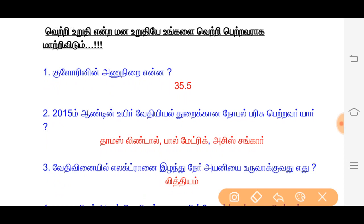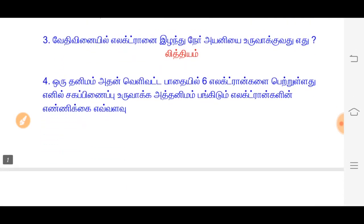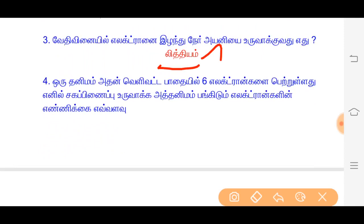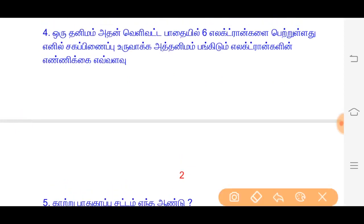First question: chlorine. This is from the year 2019. Chlorine has 6 electrons in its outer configuration.